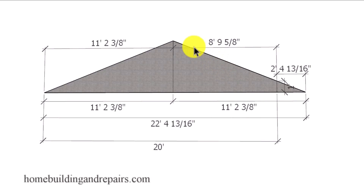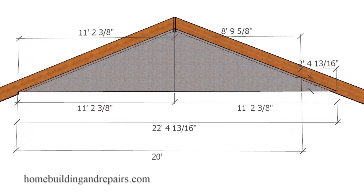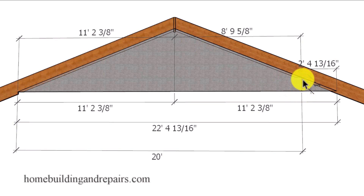That gives us the span on the right side of the building that we'll use to calculate the length of that rafter. To summarize: to find the imaginary span of the building so we can divide it in half to find the center of the ridge, all we need to do is use the height difference of the framing plates, divide the first number of the roof pitch into that number, and then multiply that result by 12.